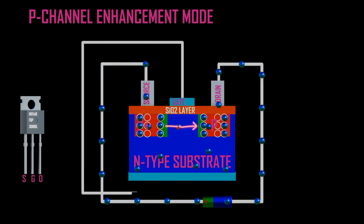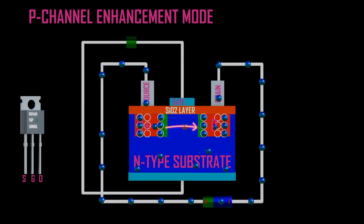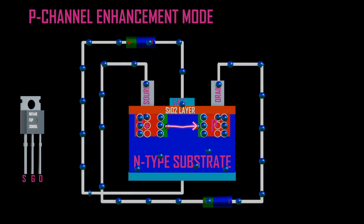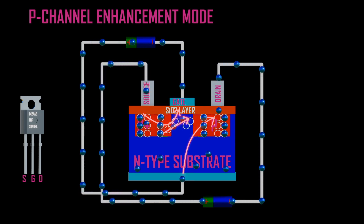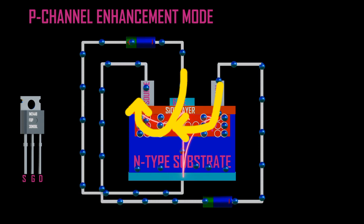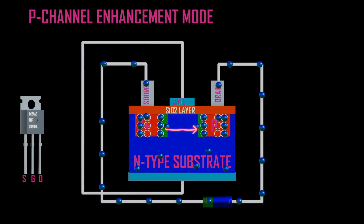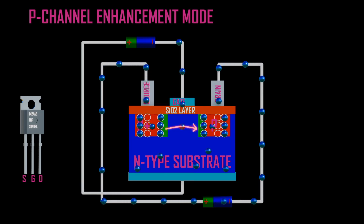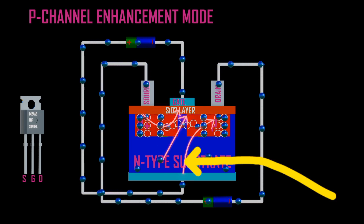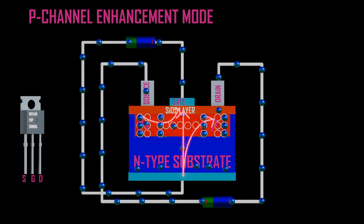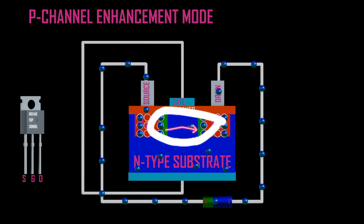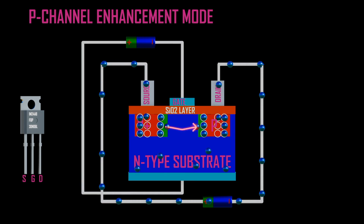When a voltage is applied at the gate, the formation of the electric field changes. This facilitates electrons to move from drain to source and gate to source, hence increasing the amplitude of current across source and drain. The majority of electrons in the N-substrate move towards the base of the MOSFET structure due to positive potential connected to the base. This facilitates holes to spread across the channel due to negative potential at the gate, and this enhancement of holes at the channel near the gate is called enhancement mode.